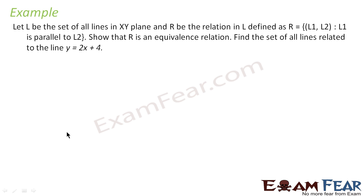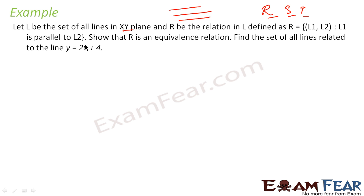Let us take one more question. The question says L is the set of all parallel lines in the XY plane and the relation R is defined as (L1, L2) where L1 is parallel to L2. We need to prove this is an equivalence relation. For reflexive, we have to prove that (L1, L1) is a member — line L1 is parallel to itself, which is true. So it is reflexive.